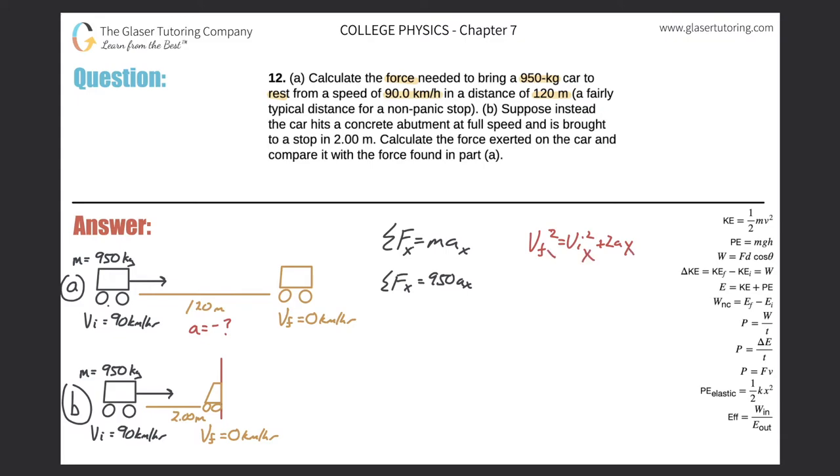The final velocity was zero. Initial was 90 kilometers per hour. Always check your units. I'd prefer that in meters per second, especially once I'm calculating force—I need the acceleration in meters per second squared.